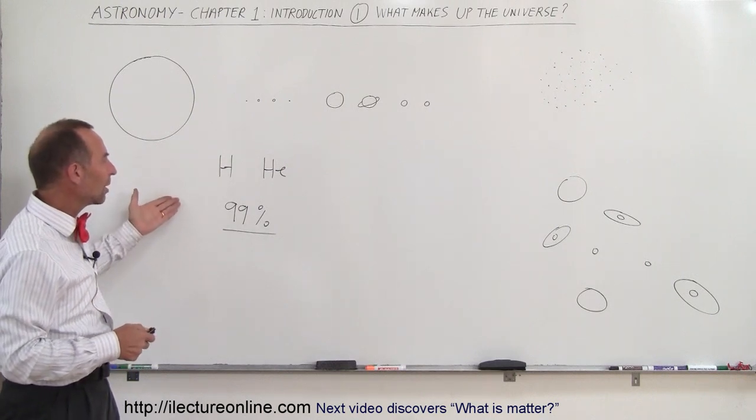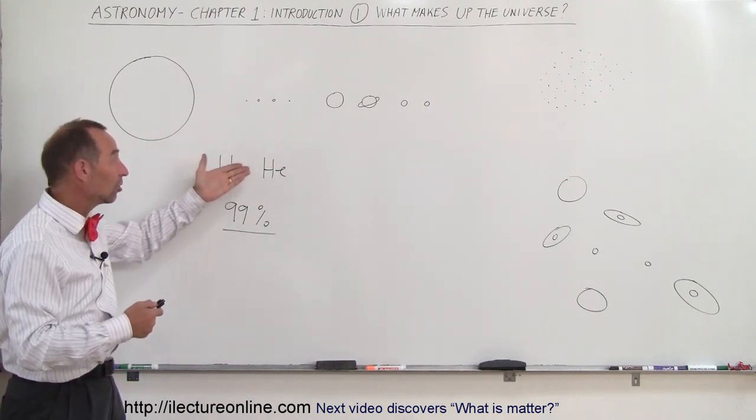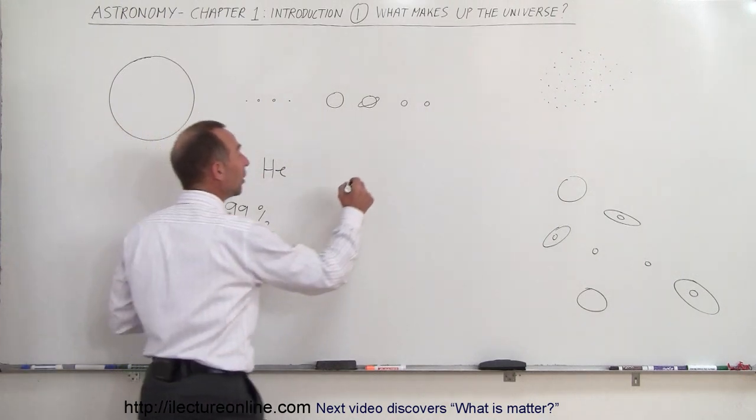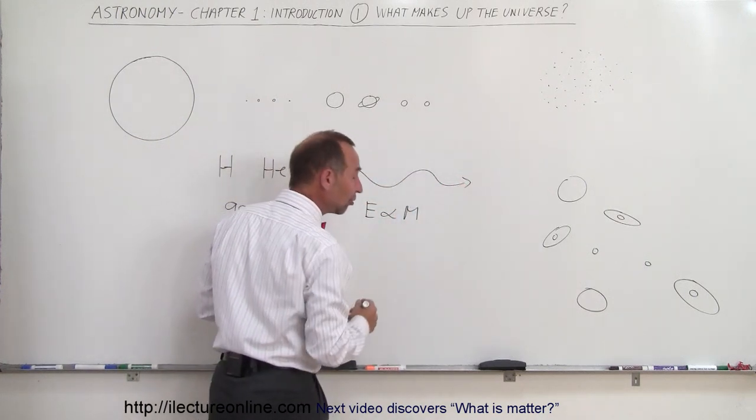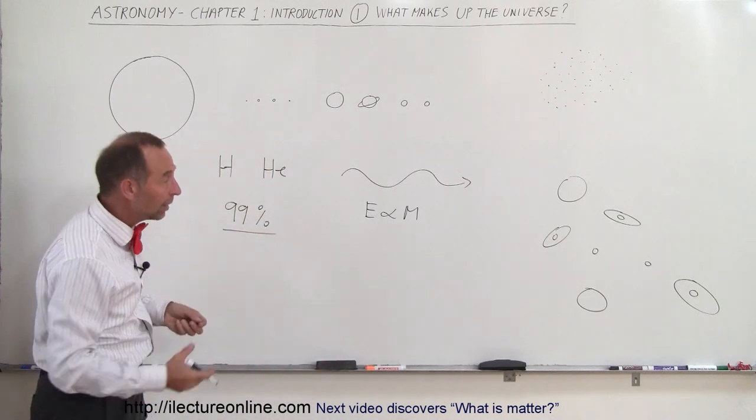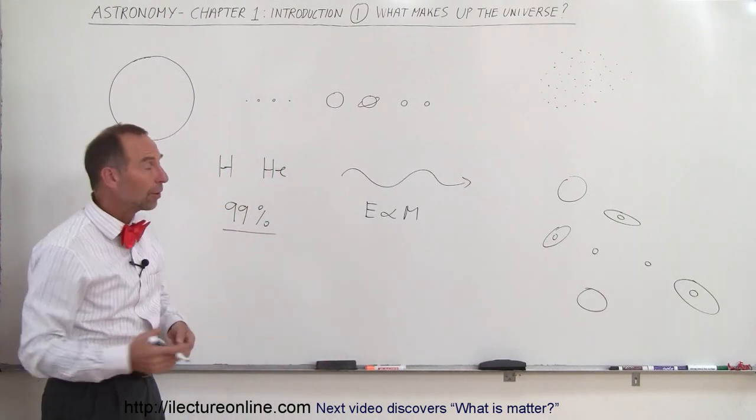Not only is the universe made out of matter, which is primarily hydrogen and helium, it's also made up of electromagnetic radiation, EM as we call it, such as visible light, infrared, ultraviolet, x-rays, and gamma rays.